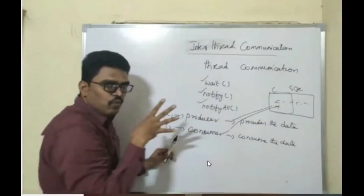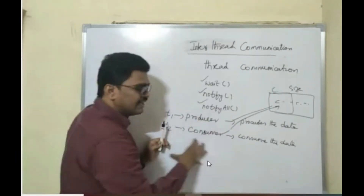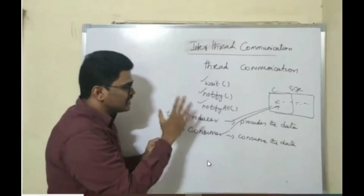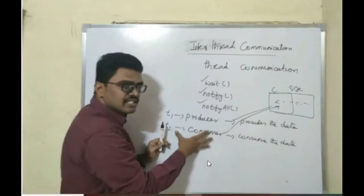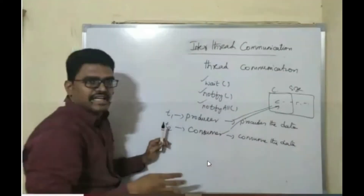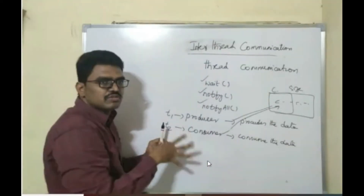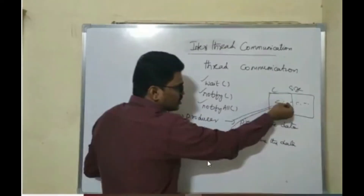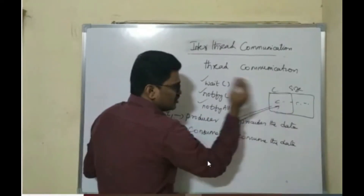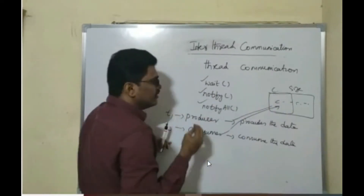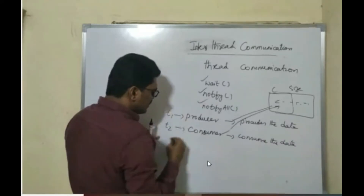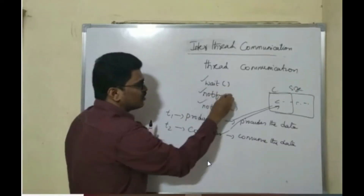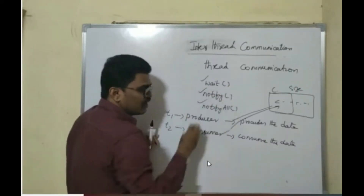We are not going to discuss the code in detail as it takes a lot of time. The purpose is just to understand what interthread communication is for. The producer produces data and stores it, and then only the consumer consumes it. These two are represented as two threads and they use wait, notify, and notify all methods to communicate.